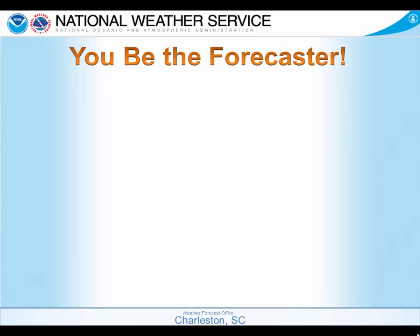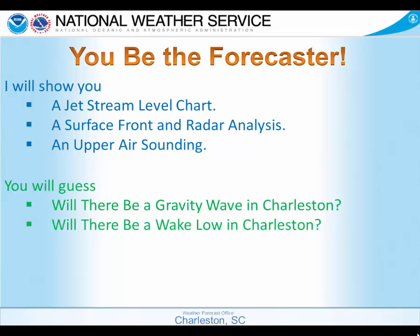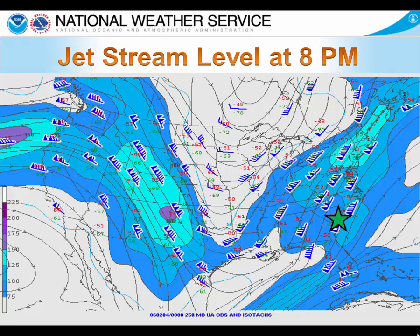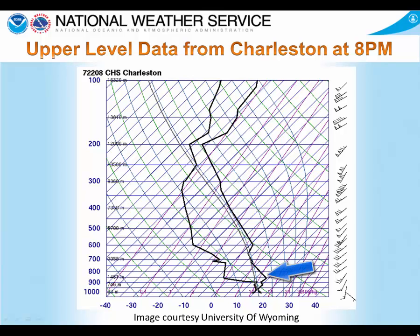Now it's time for you to be the forecaster. I'm going to give you a jet stream level chart, a surface front and radar analysis, and an upper air sounding, and you will guess: will there be a gravity wave in Charleston, or will there be a wake low? Here's the jet stream level at 8pm for this particular case — Charleston is marked with the star. You can see a strong upper-level trough in the center part of the country, well to the west of Charleston, and very strong jet stream level winds on the east side of that trough. Here's the upper-level data from the sounding at Charleston that evening based on the balloon we launched. Pay special attention to the solid black line the arrow is pointing to, which is the temperature trace through the atmosphere. Do you notice any specific characteristics that might be favorable for either a gravity wave or a wake low?